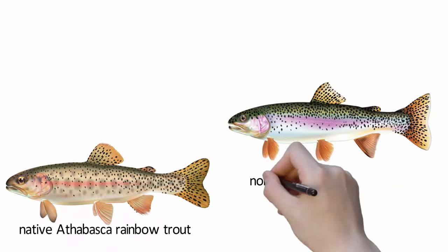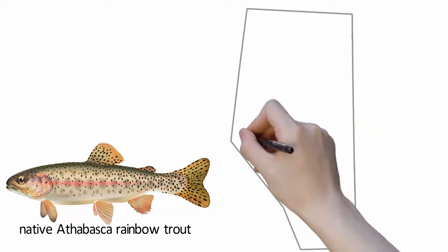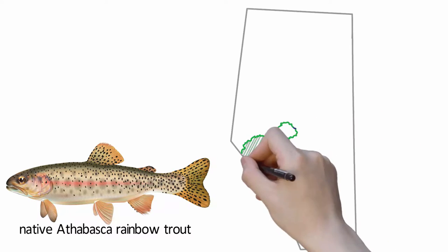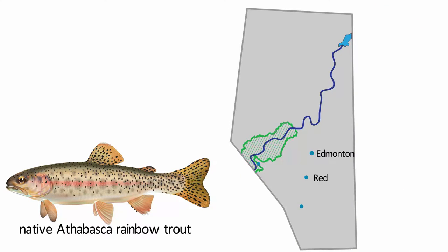Athabasca rainbow trout and non-native rainbow trout have similar features. However, Athabasca rainbow trout are only found within the upper Athabasca River and its tributaries. If you catch a rainbow trout there, it's best to release it.